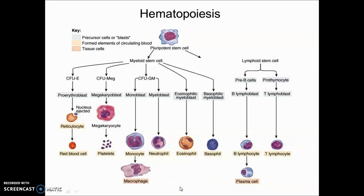Two common MCQs: macrophages arise from monocytes — remember the monocyte-macrophage system. When monocytes enter tissue, they form macrophages. Plasma cells form from B-lymphocytes — remember 'plasma B-cell disorder.' These blast cells are your precursor cells.